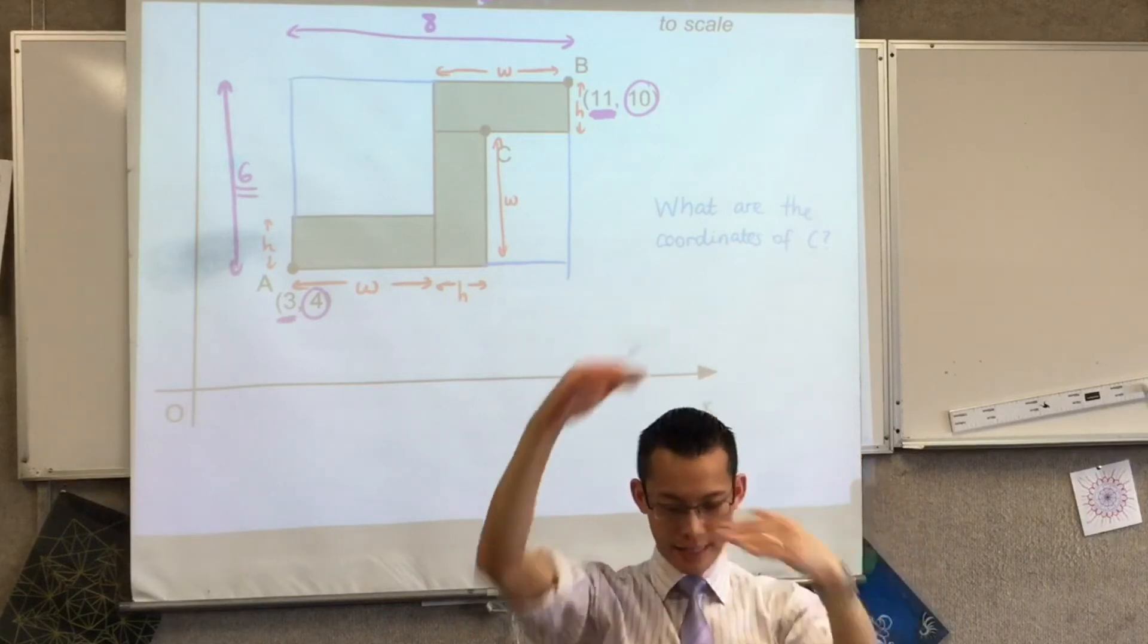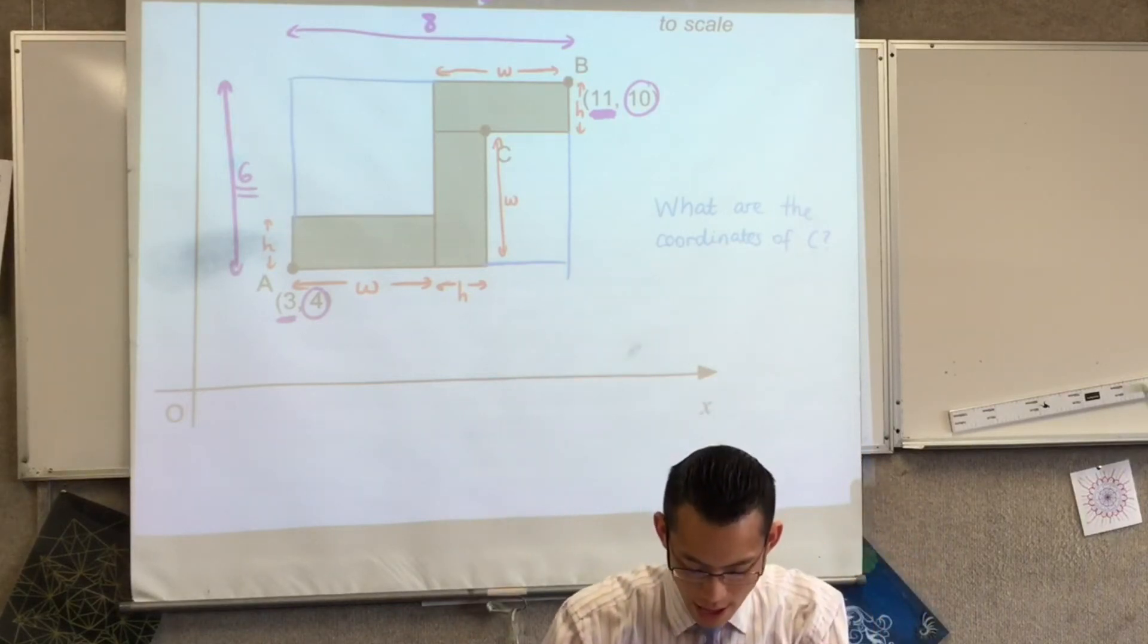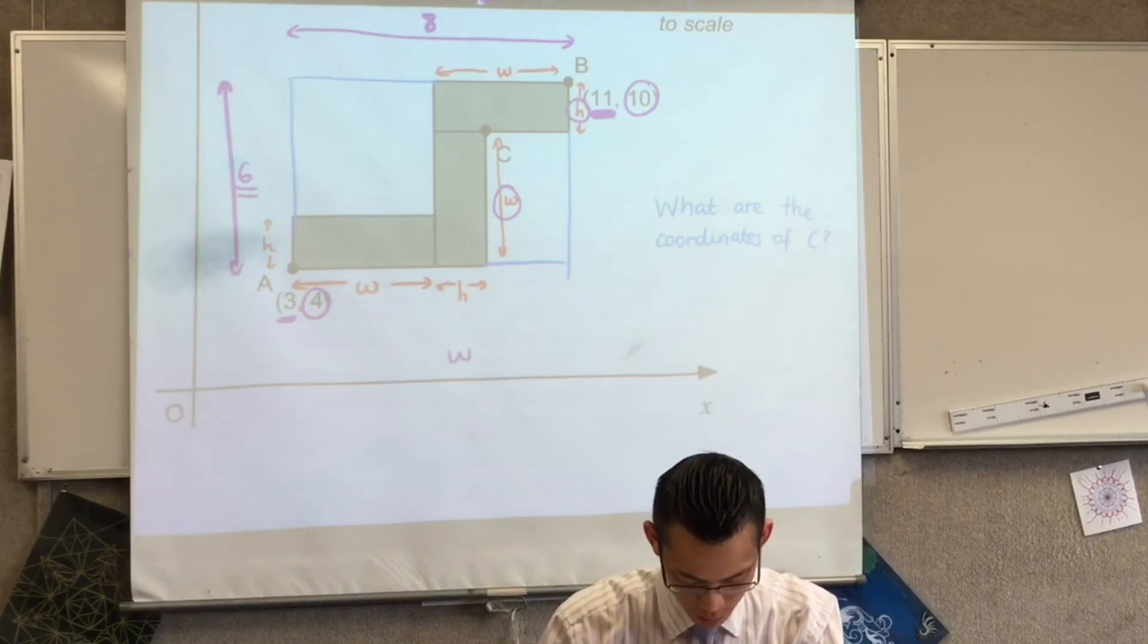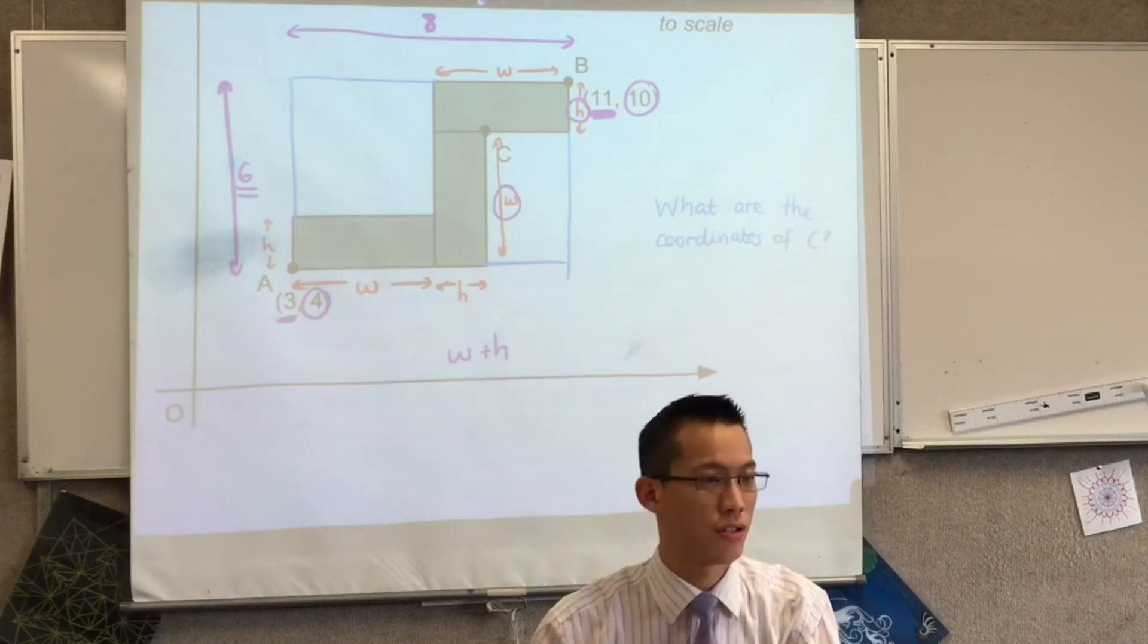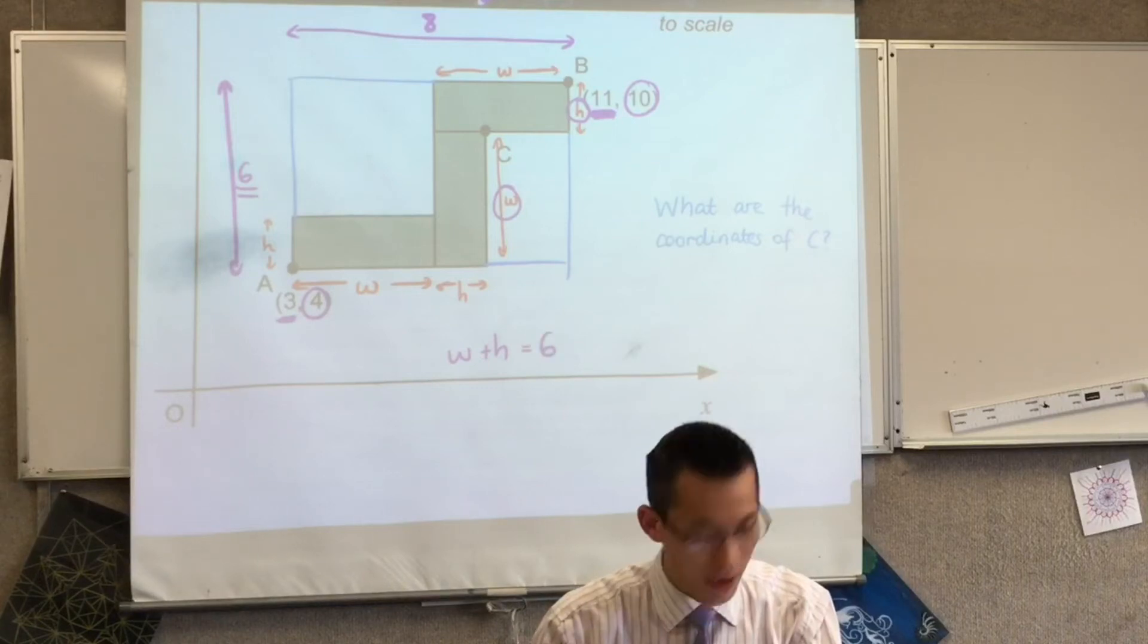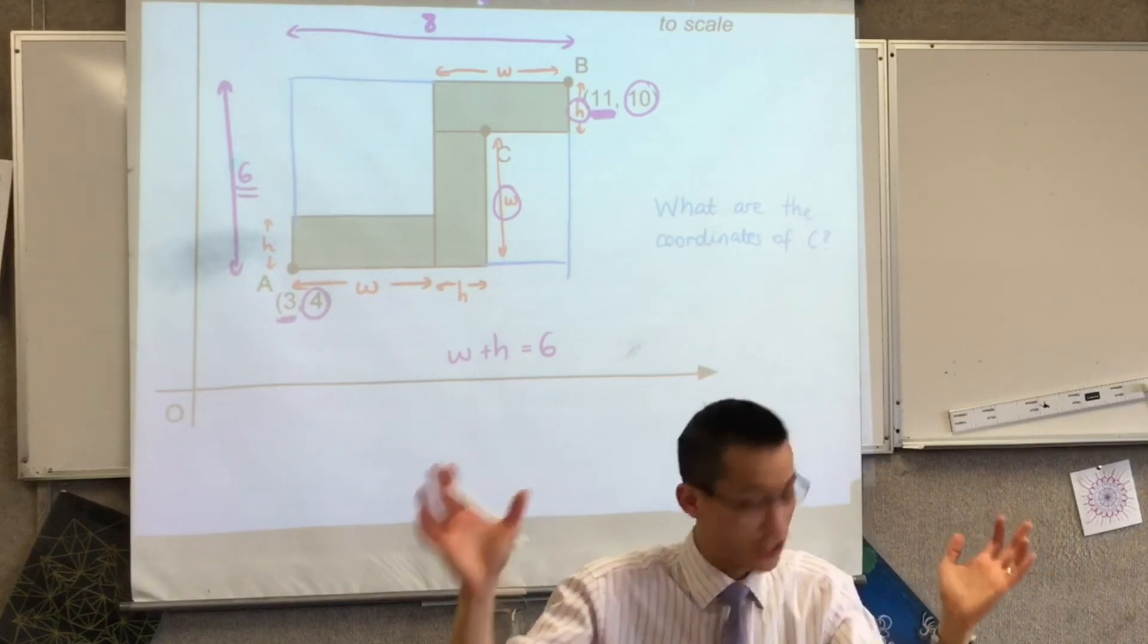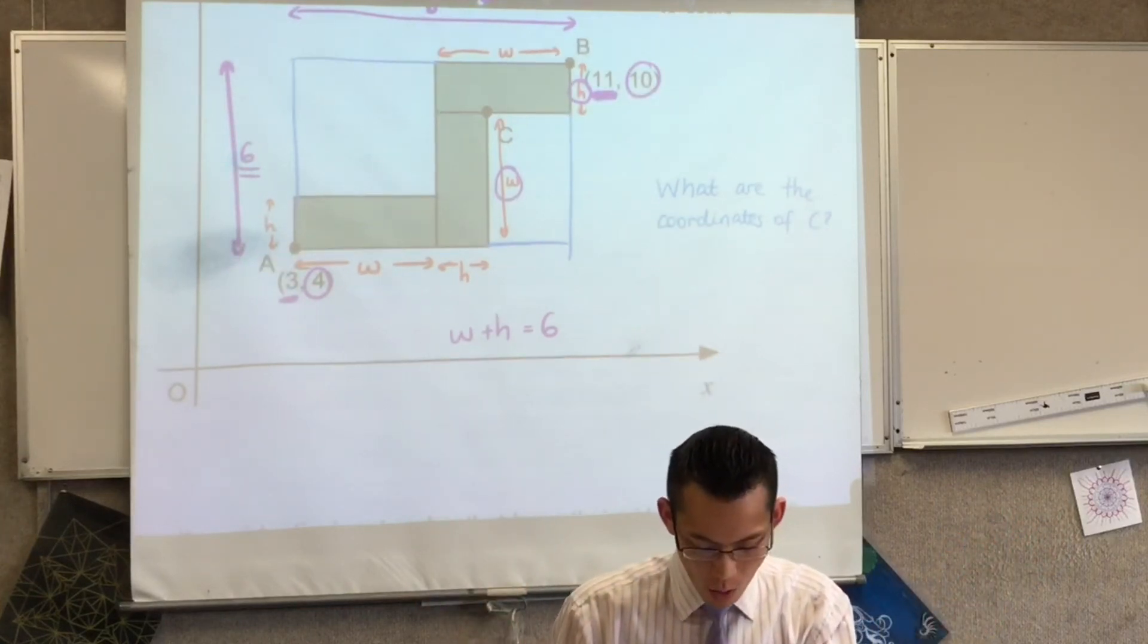Okay, this is good. I'm almost there. Watch this. Okay, if I look up and down, right, up and down, I've got W plus H. Do you see that? W plus H, and they're going to be that up and down length, right? Six. You agree with that? Whatever W and H are.